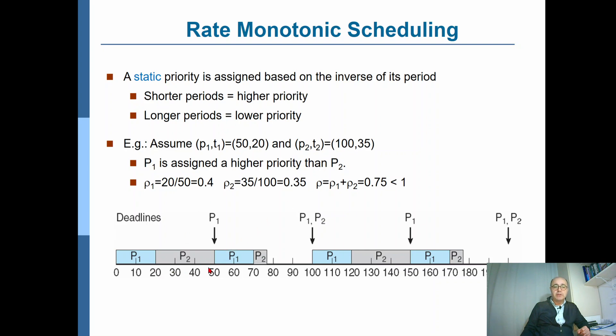However, after it has executed for 30 time units at T equals 50, P1 appears once again because it has a period of 50 time units. So when P1 arrives, although P2 is not finished yet, since rate monotonic scheduling is a preemptive algorithm, it will preempt P2 from the CPU.